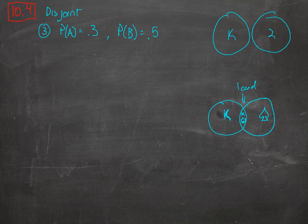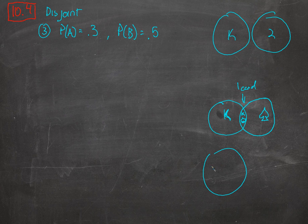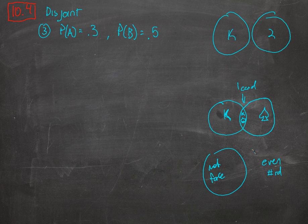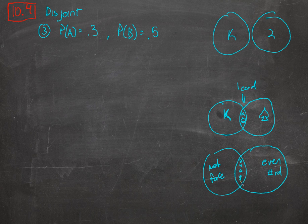There's overlap between twos and spades, and between cards that are not face cards and even-numbered cards. Cards that are not face cards and even-numbered — there's the two, four, six, eight, and ten card in each suit, so there are five of them in each suit. Five times four, there are 20 cards that are both of these things. But there's no overlap between kings and twos, and no overlap between spades and diamonds — you can't have a card that's a spade and a diamond at the same time.